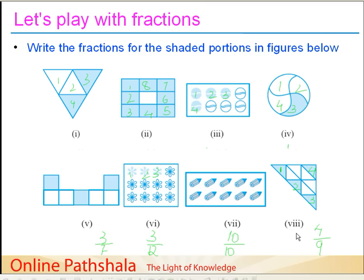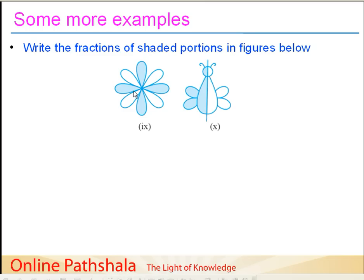This is how we come up with fractions. We have a flower pattern where all petals are of equal size — it's important to divide the object into equal parts. How many petals does this flower have? 1, 2, 3, 4, 5, 6, 7, and 8. So the denominator is 8. The numerator: 1, 2, 3, and 4 parts are shaded. So we have 4 by 8. In the next design, which is symmetrical and divided into 2 parts — 1 and 2 — the denominator is 2 and one half is shaded, so this becomes 1 by 2.